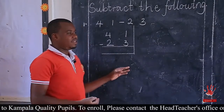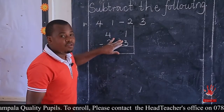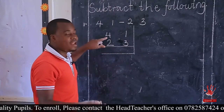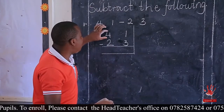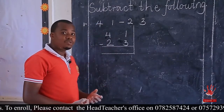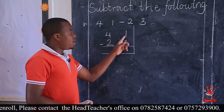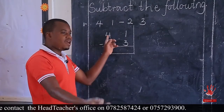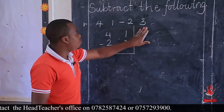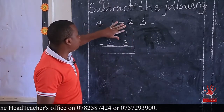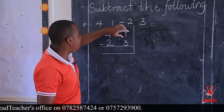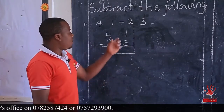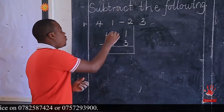Look here attentively. What is 1 take away 3? You realize 1 is small. So what do we do? We regroup the next number — the neighbor. We run to the neighbor and regroup. The number in the next place value. So before you do anything here, you first regroup and make sure that this number is bigger than the number below. That's when we can subtract it. So 1 take away 3 — 1 is small, but we regroup the next number.